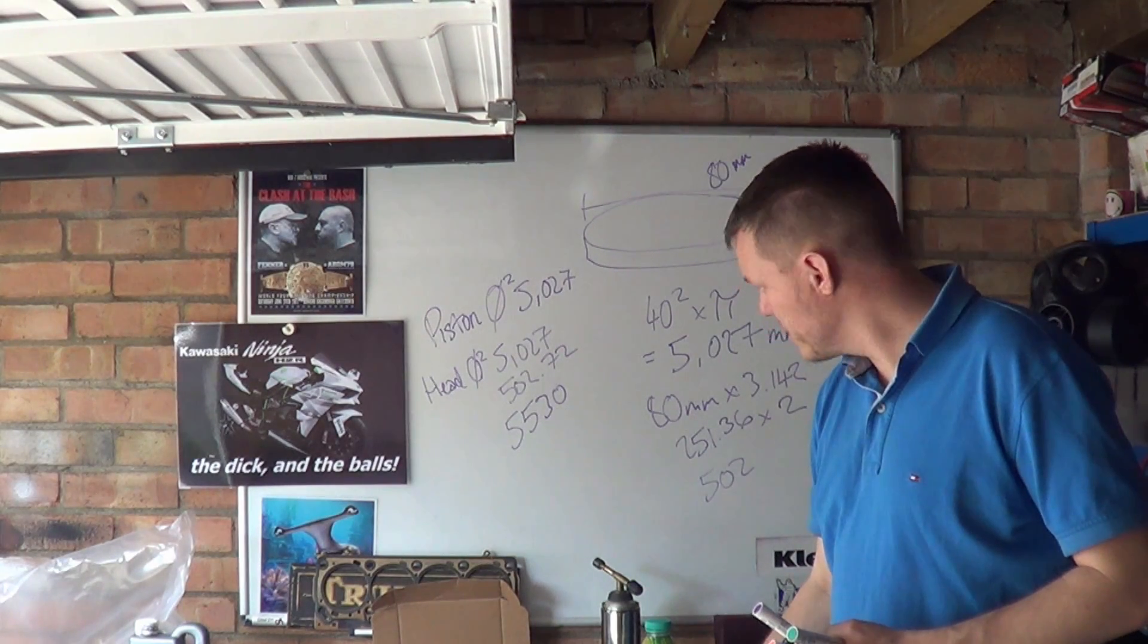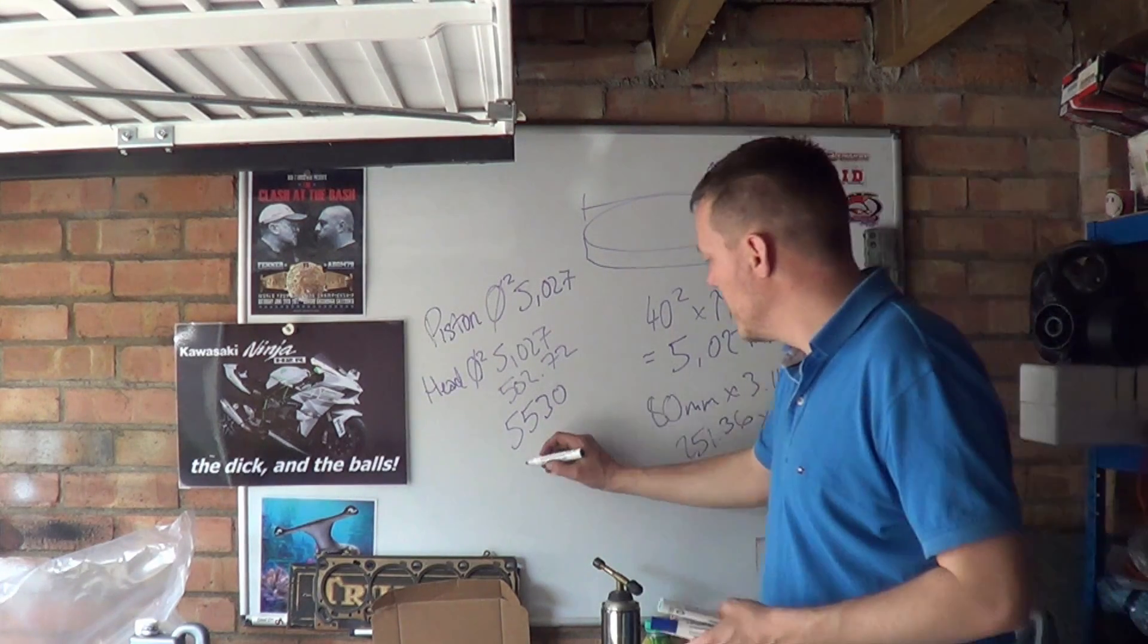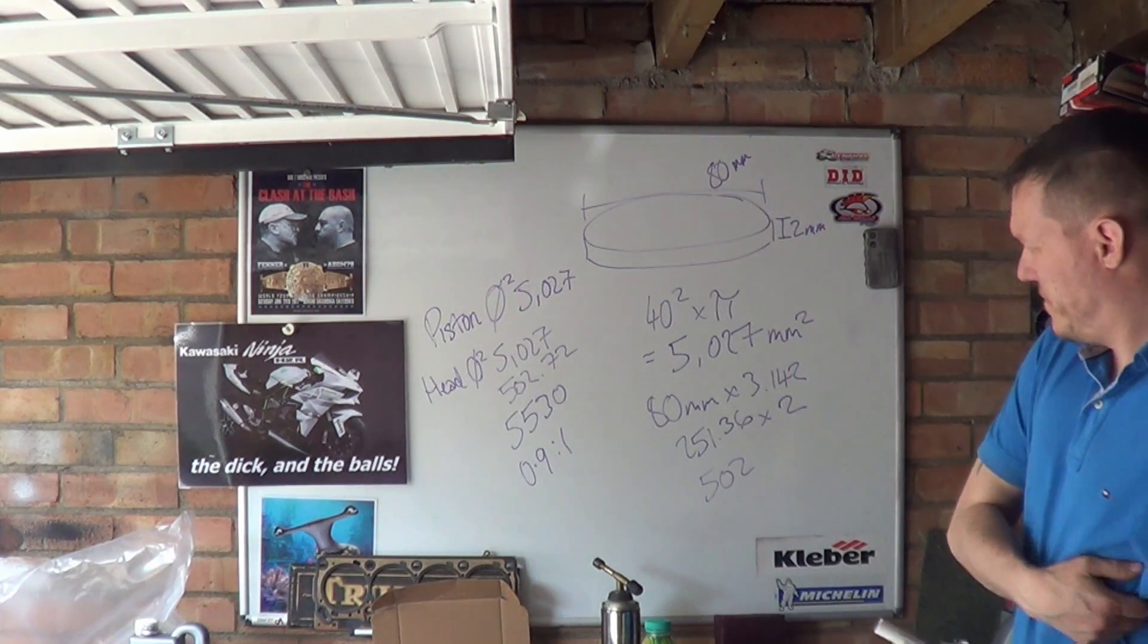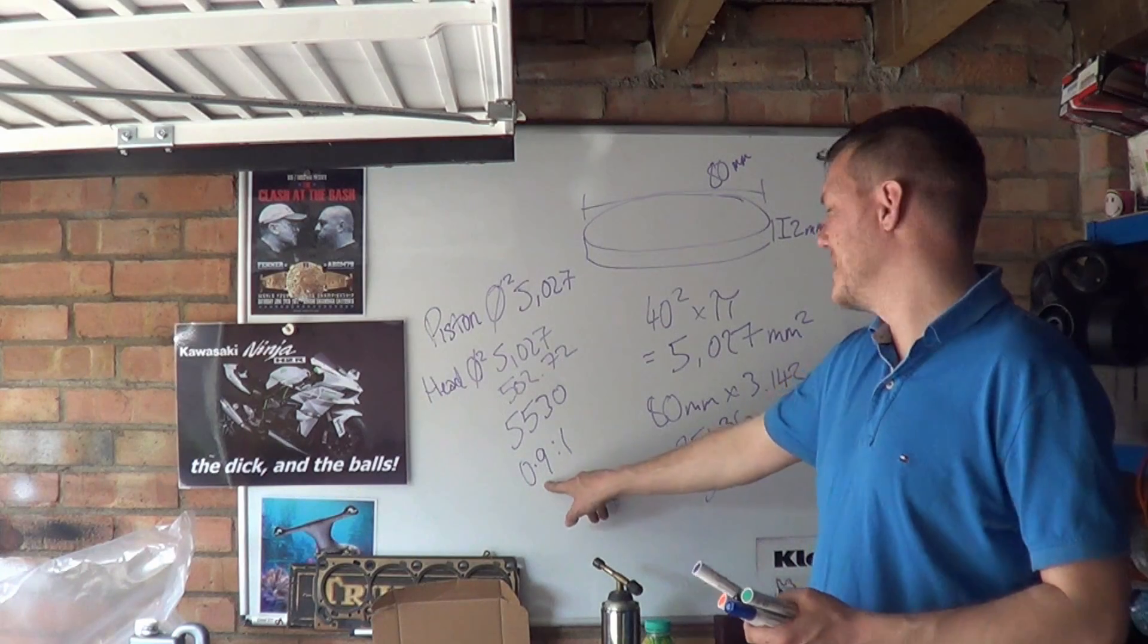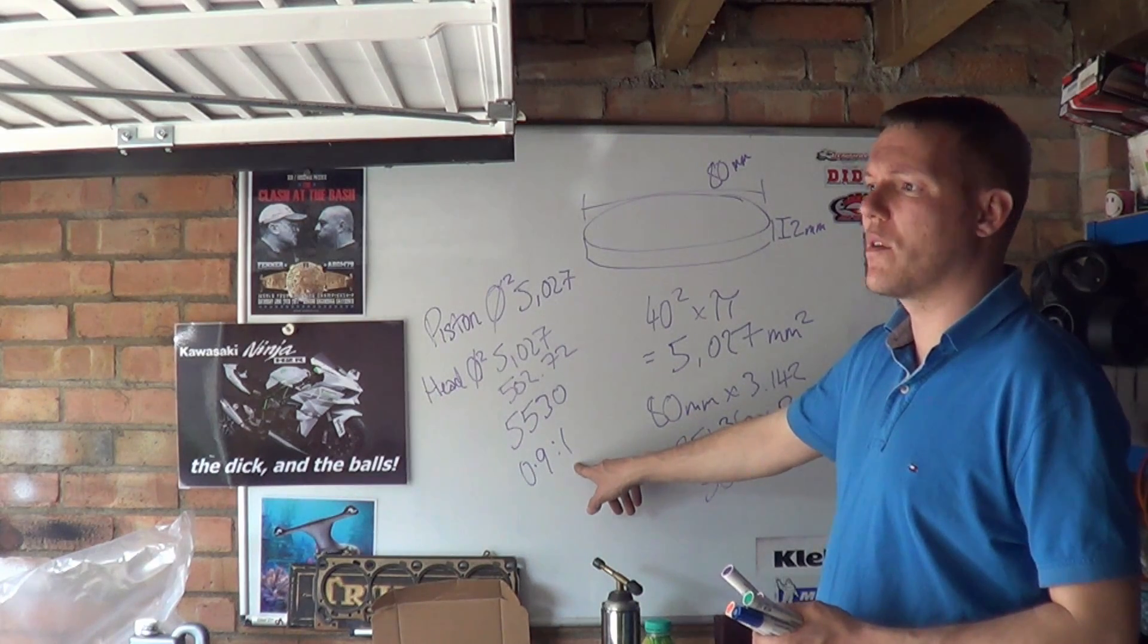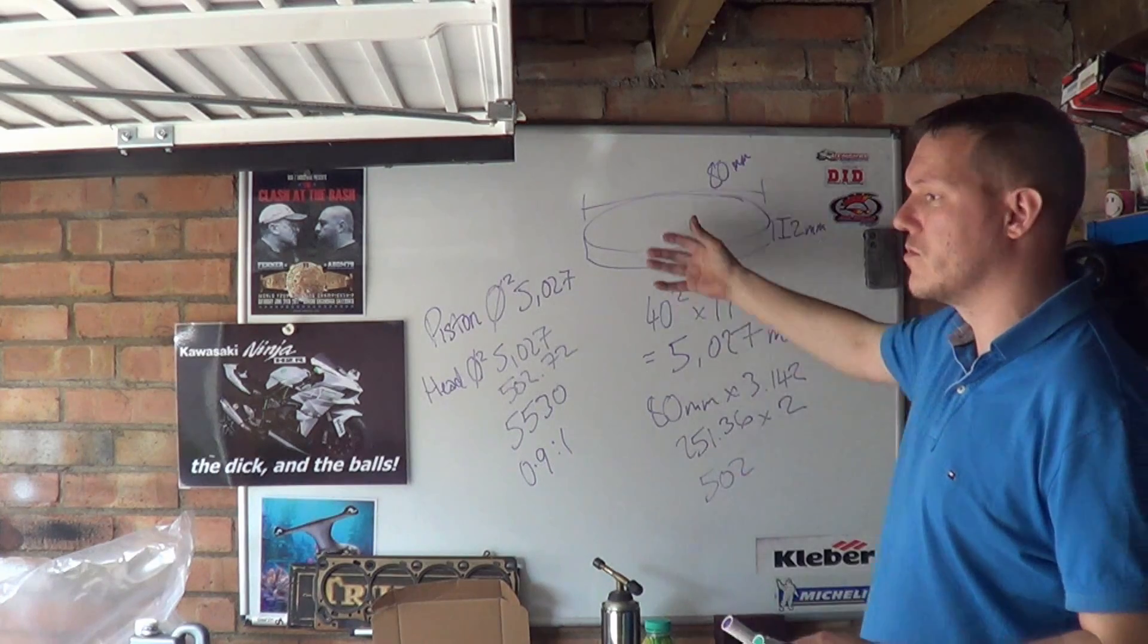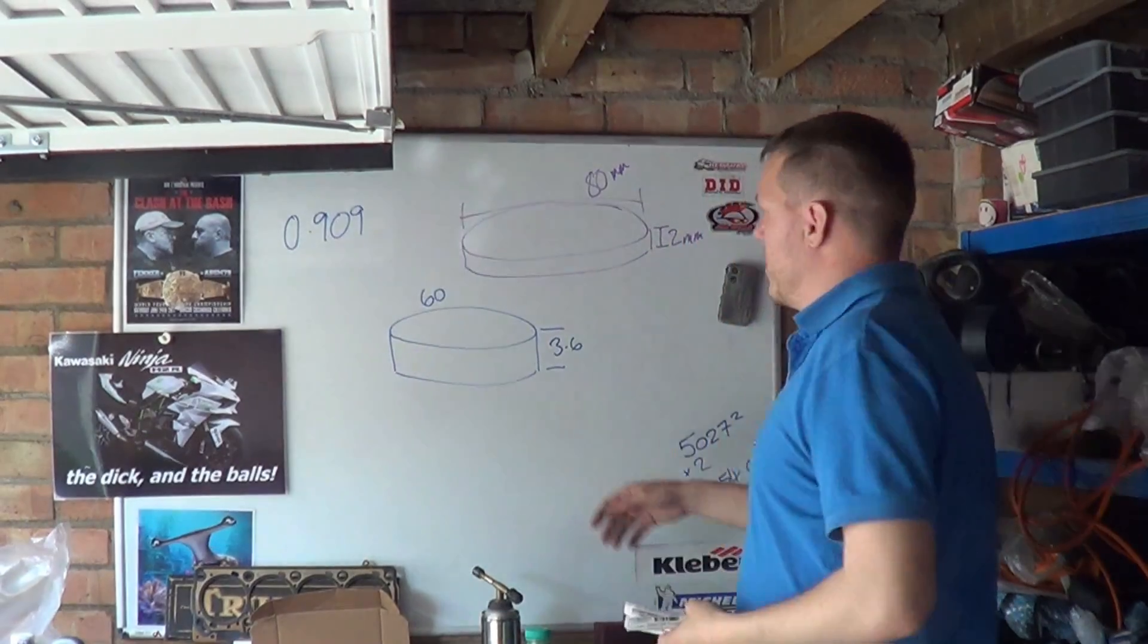Then we plus these two together: 5027 plus 530 equals 5530 millimeters squared. So the ratio between piston area and this is 5027 divided by 5530, which is 0.9 to 1. Our piston is 0.9 times the size of our entire surface area.